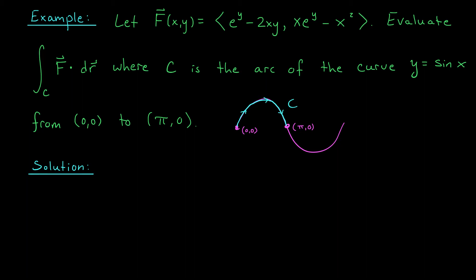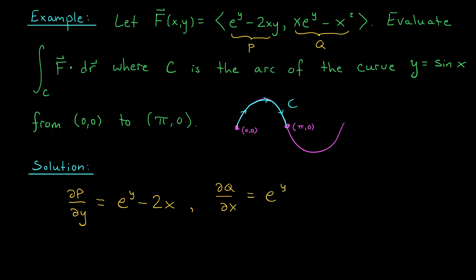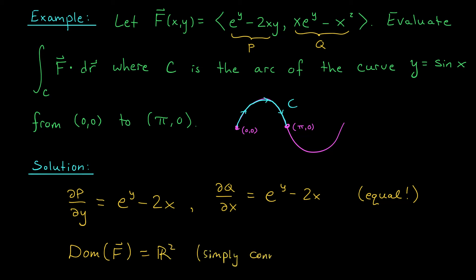Before I start the lengthy process of finding a potential, I'm going to make sure that a potential exists. I'll call the first component p and the second component q, and apply the component test. I compute ∂p/∂y, which is simply eʸ − 2x. Next, I compute ∂q/∂x and get eʸ − 2x — exactly what we got before. Since my partial derivatives agree, and the domain of my vector field is all of ℝ², which is simply connected, the component test says f is conservative and we should be able to find a potential function.